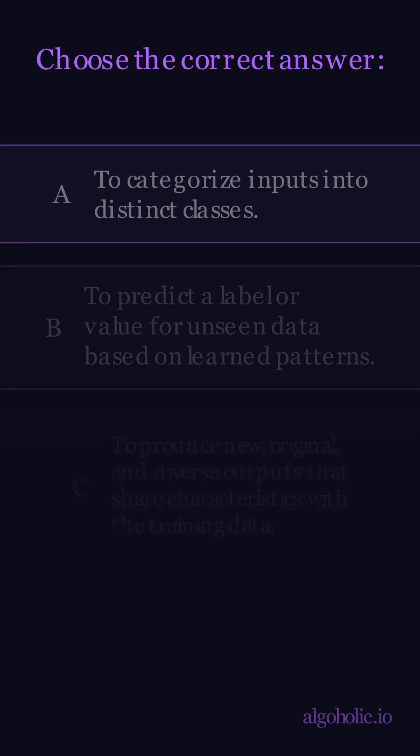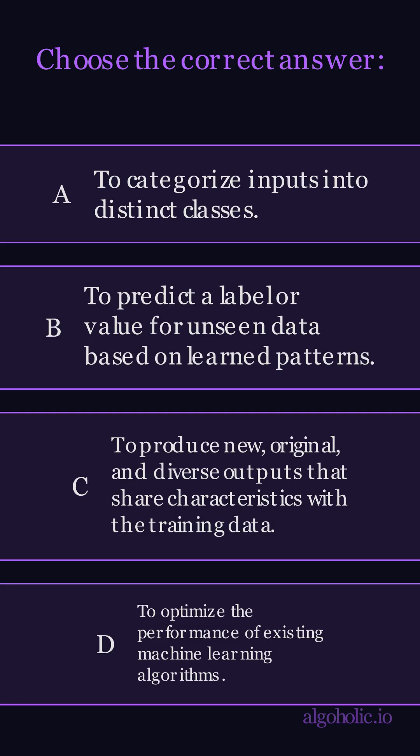A. To categorize inputs into distinct classes. B. To predict a label or value for unseen data based on learned patterns. C. To produce new, original, and diverse outputs that share characteristics with the training data. Or D. To optimize the performance of existing machine learning algorithms.